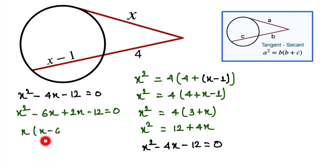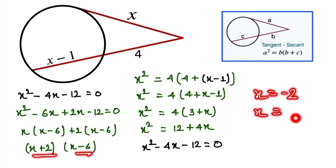Factoring: x(x minus 6) plus 2(x minus 6) equals (x plus 2)(x minus 6). This gives us two values: x equals minus 2 and x equals 6.